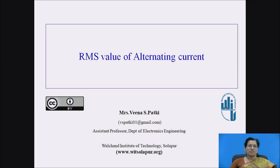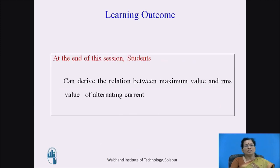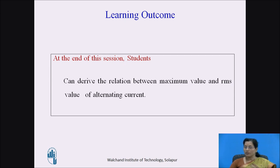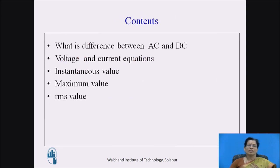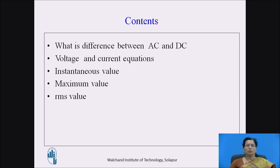Welcome you all for this session. At the end of this session, students can derive the relation between maximum value and RMS value of alternating current. In this session, we are going to discuss about the difference between AC and DC, voltage and current equations, instantaneous value, maximum value, and RMS value.